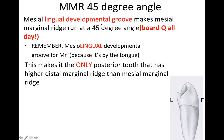Going to the mesial marginal ridge — we're going to see a lot of questions about this, it's basically guaranteed. If they ask you about a premolar, they're going to ask about this. It's got a 45-degree angle on it. The mesial lingual groove makes the mesial marginal ridge run at a 45-degree angle. It's a mesial lingual developmental groove that runs off the marginal ridge — it's on the lingual side, down near the tongue. Remember, the mandibular premolar is near the tongue, so it's the one with the mesial lingual developmental groove.